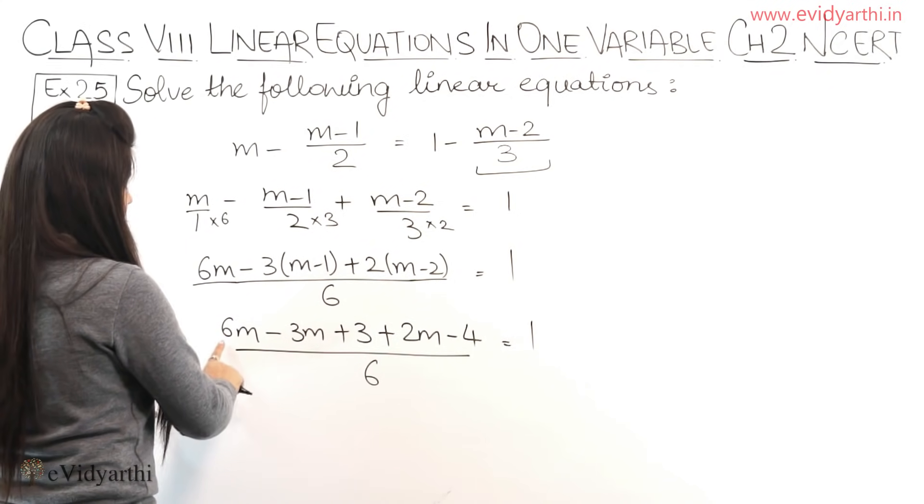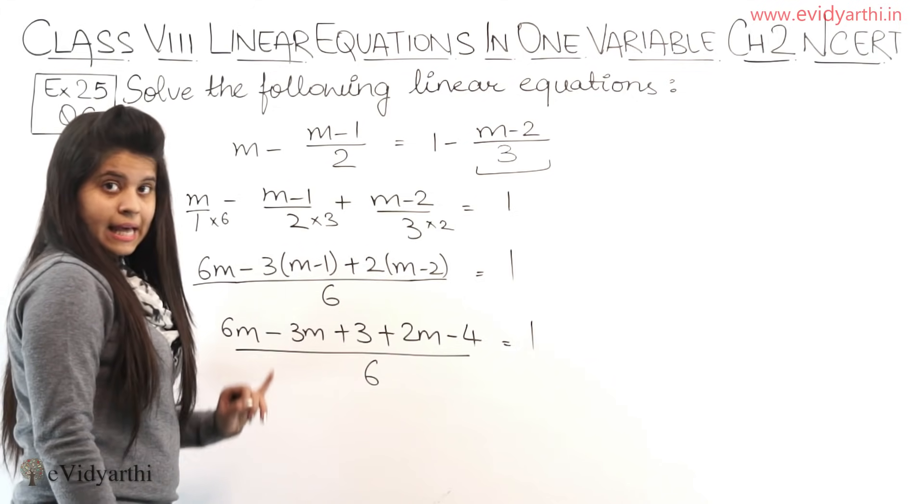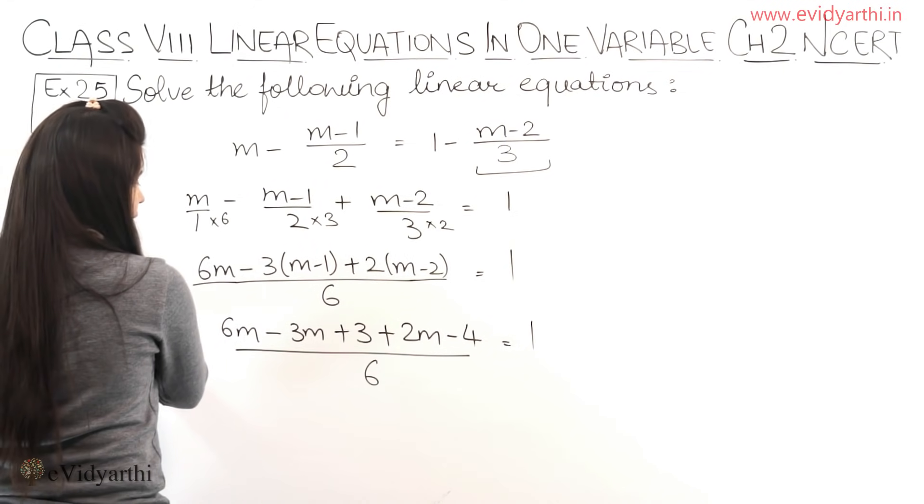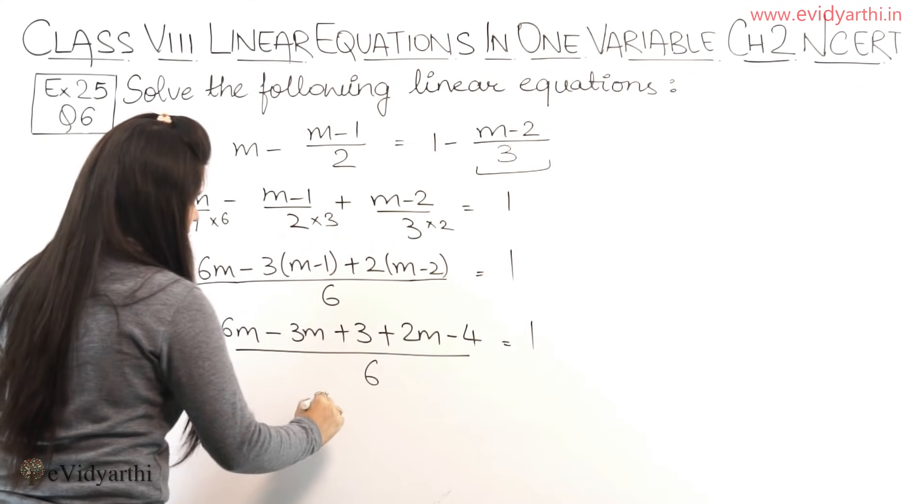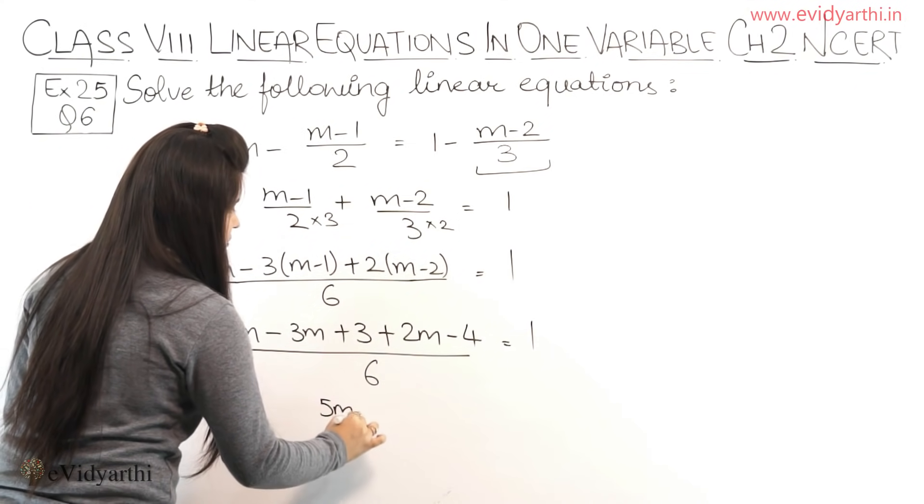Now solving, all the M terms: 6 minus 3 is 3, so we get 3M, and then we have plus 2M. So 3 plus 2 is 5, so we'll get 5M.